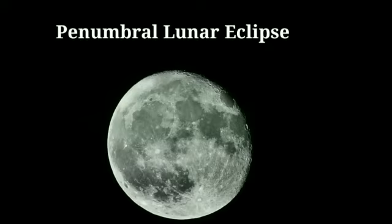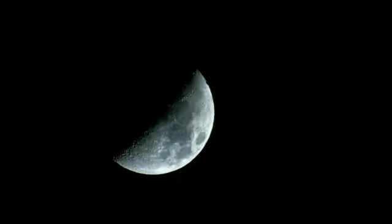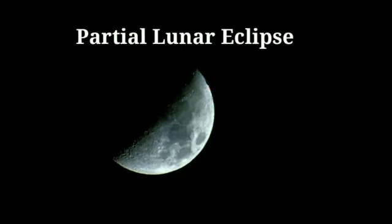It happens when the moon travels through the faint penumbra portion of the earth's shadow. A partial lunar eclipse happens when the earth moves between the sun and the full moon but they're not precisely aligned. Only part of the moon is visible.